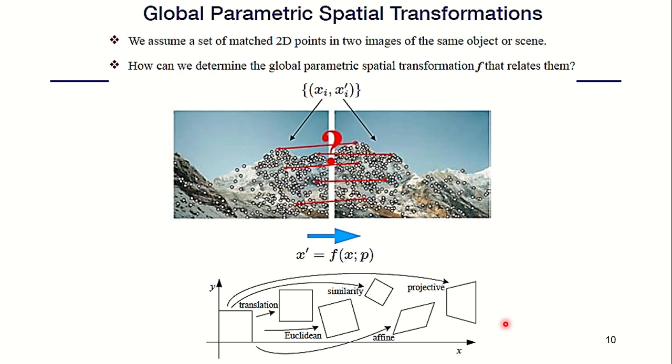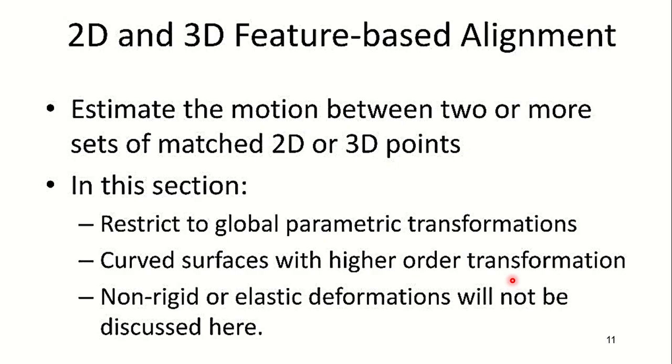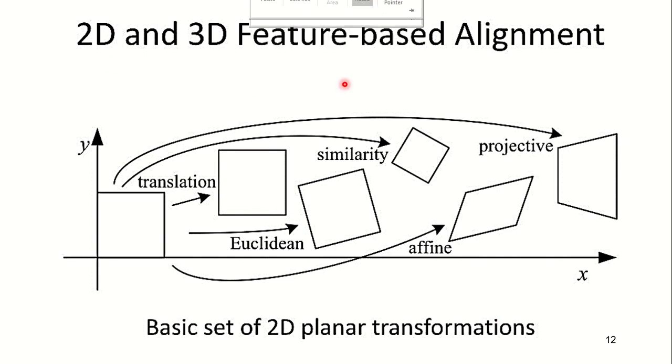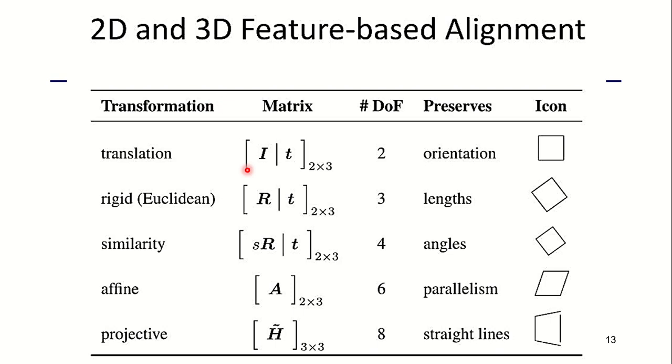These are some forms of transformations: translation, Euclidean, similarity, affine, and projective. In 2D and 3D feature based alignment, we estimate the motion between two or more sets of matched 2D or 3D points. In this section, we look at global parametric transformations. We do not discuss non-rigid or elastic transformations. The basic set of 2D planar transformations are translation, Euclidean, similarity, affine, and projective. These are the different matrices, DOF, and what it preserves and their corresponding icons.